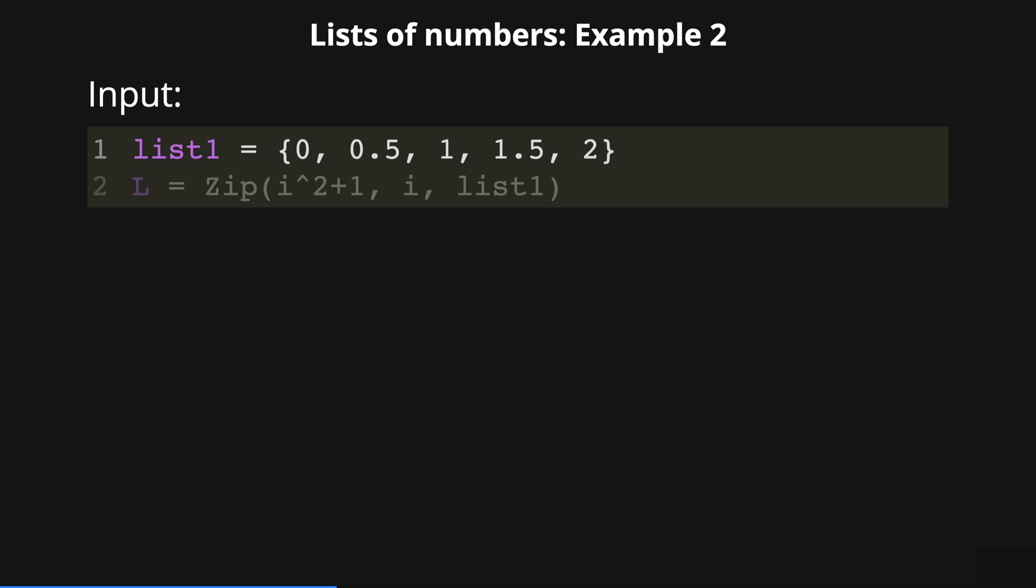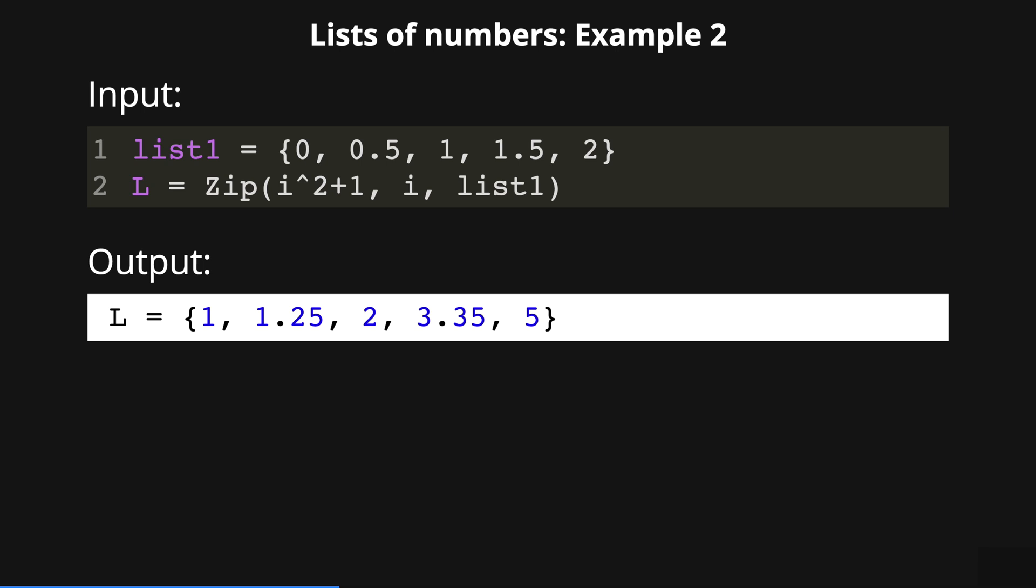Here we define list1 as a sequence of numbers from 0 to 2 with an increment of 0.5. Then within the zip command we define the expression i to the power of 2 plus 1 where i is the variable that belongs to list1. The output is then the list in this case 1, 1.25 to 3.35 and 5.